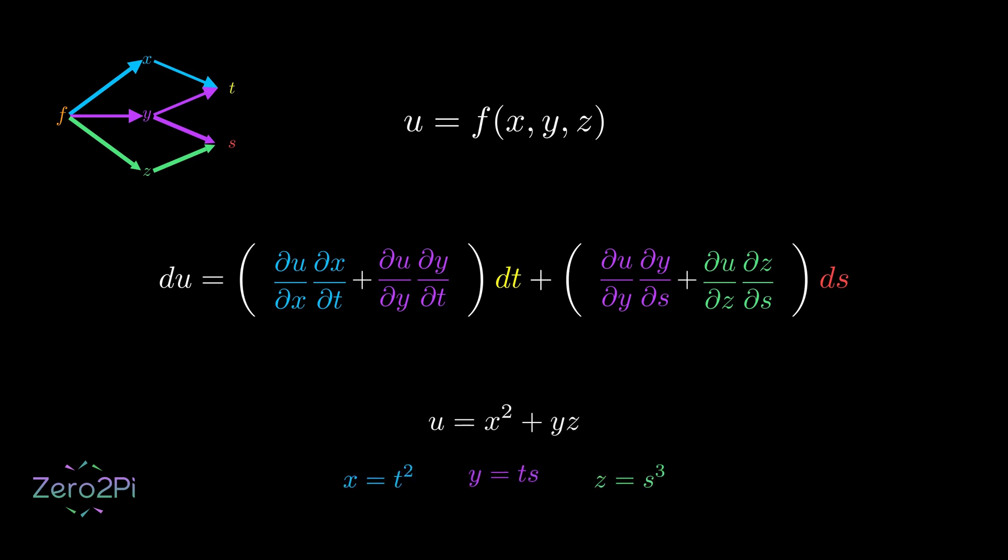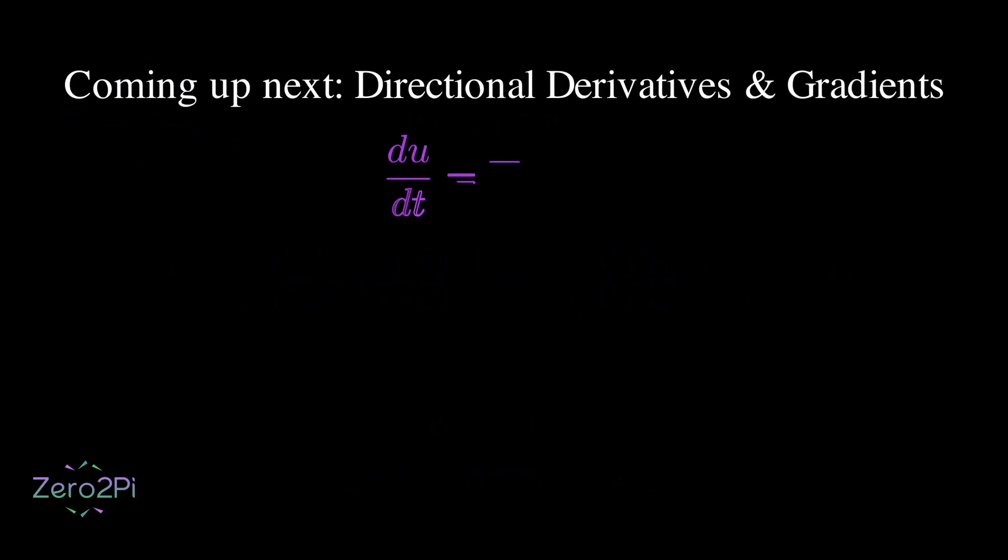Moving forward to understand it deeper, we can discuss the directional derivative, which is the dot product of two vectors. The first vector is the gradient of u, which is simply a vector containing all of u's partial derivatives. It points in the direction of the steepest ascent on our surface.